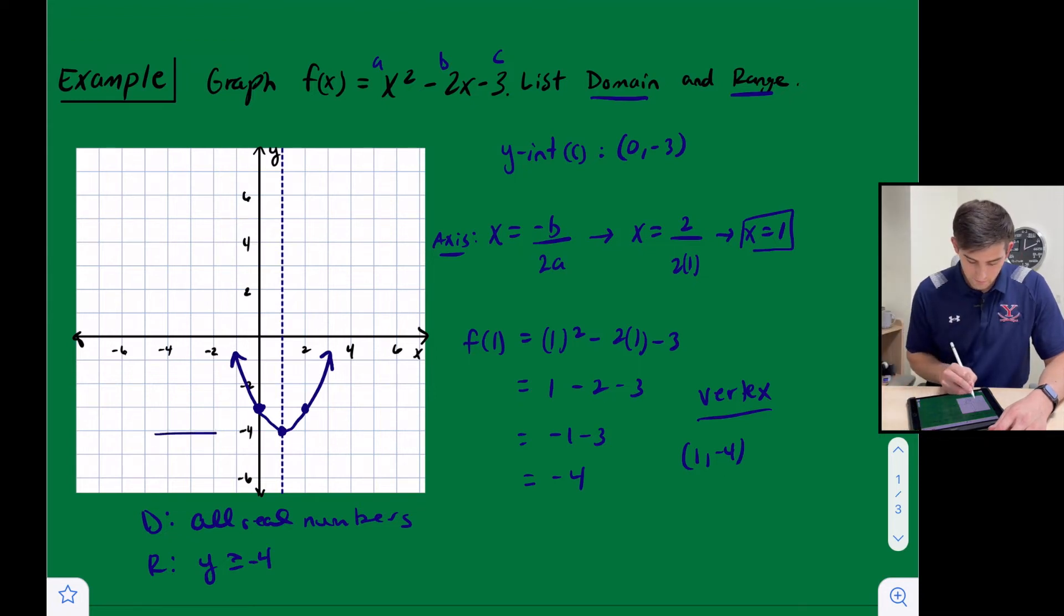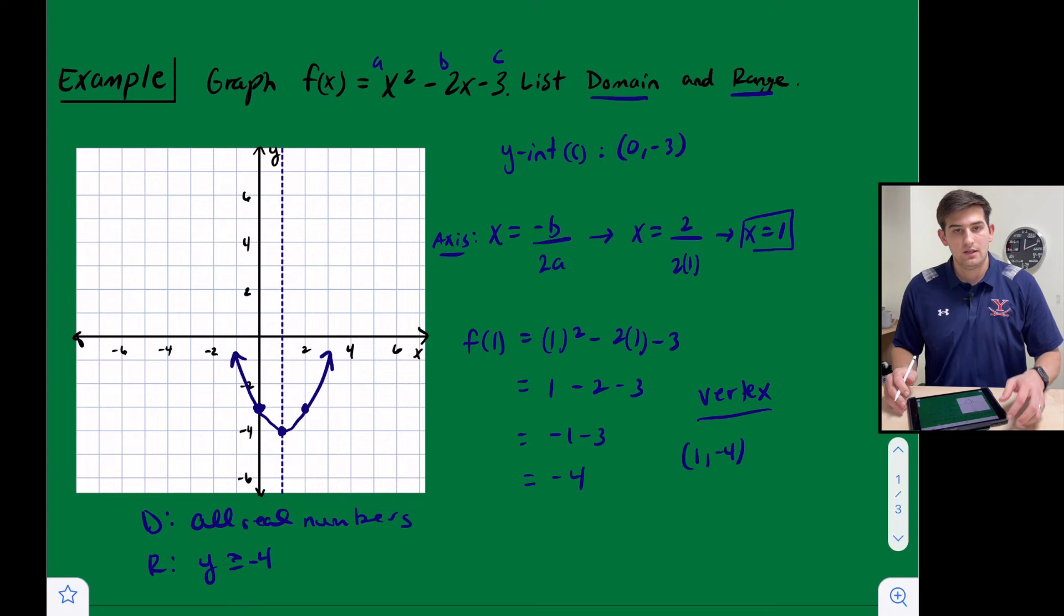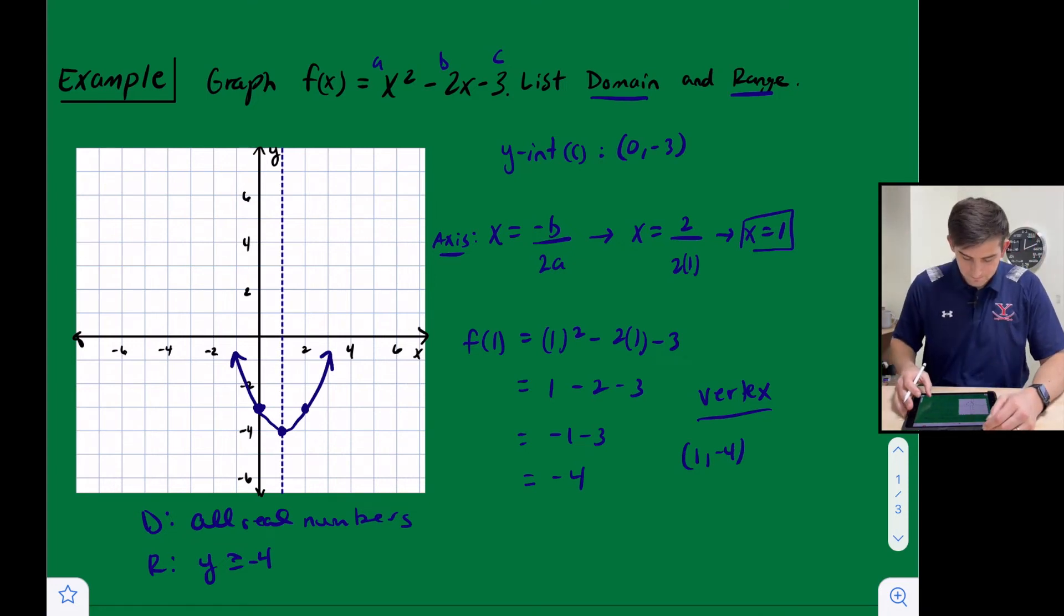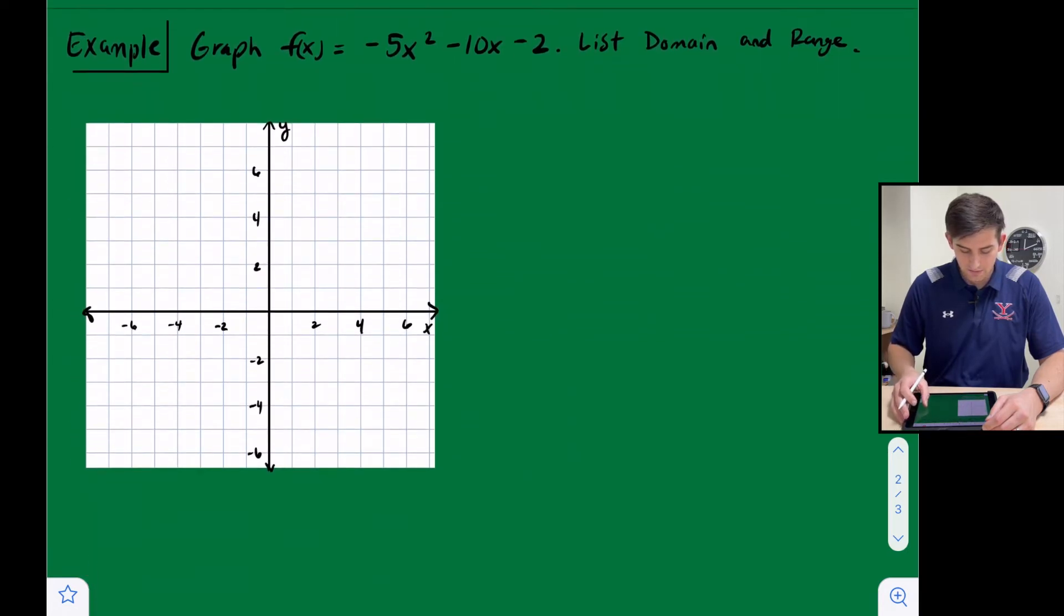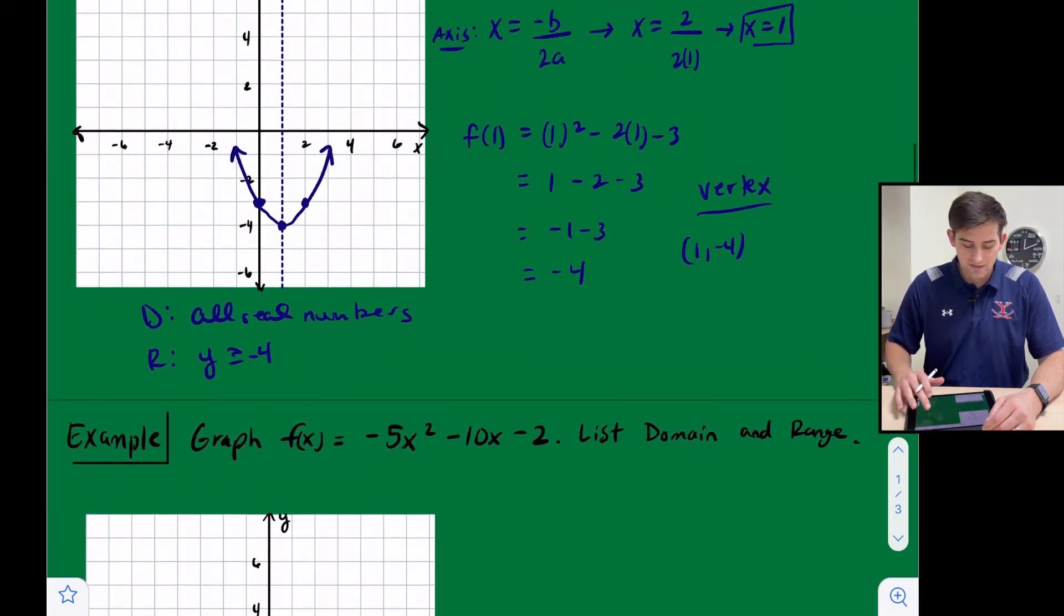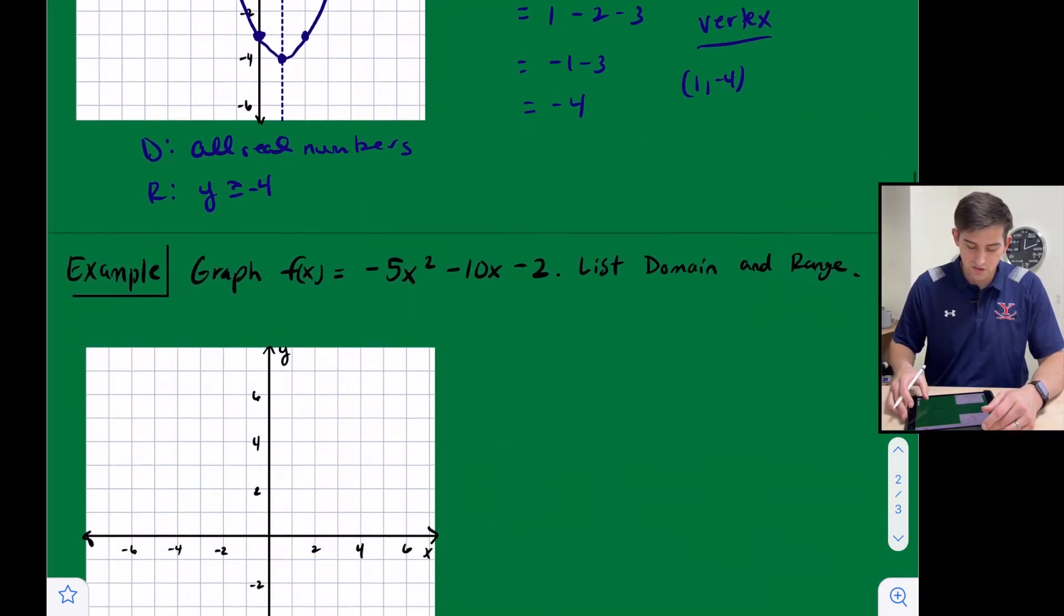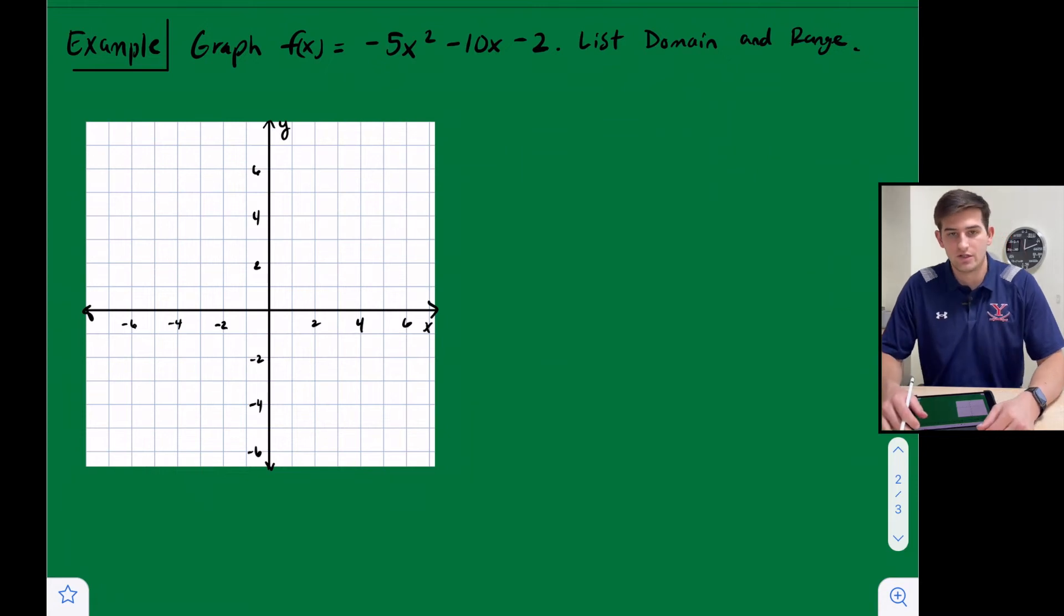But our range is going to be y is greater than or equal to negative 4, because negative 4 here is our lowest point. And we include that point. So it's a closed circle, but then we go up forever. All right, let's look at another example. Actually, back to this example real quick. Notice how a was a positive number, our parabola opened up. That's a good place to start just to know if your parabola is facing the correct direction.